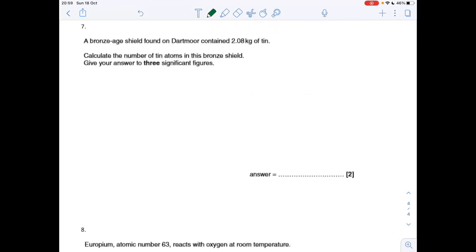Number seven, we've got this Bronze Age shield which contains 2.08 kilos of tin, so obviously that needs to go into grams. Calculate the number of tin atoms in the Bronze Age shield. So the first thing we've got to do is work out how many moles of tin we've got. So moles of tin is 2080 grams divided by 118.7, the MR of tin. That's 17.523 moles.